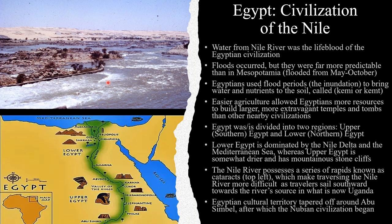Egyptian cultural territory tapered off around Abu Simbel, shown here, after which the Nubian civilization began. Although during the New Kingdom, at the height of ancient Egypt's power, the Egyptians expanded briefly south of Abu Simbel.